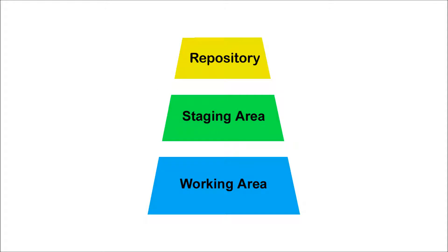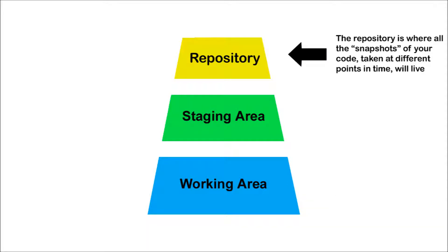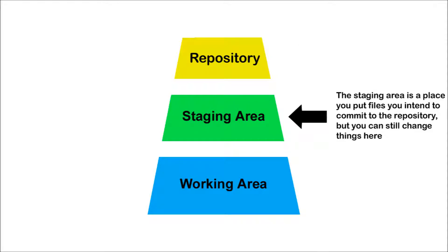Here's a high-level sketch of what Git is. It's based on a three-fold model. The working area is just the space that you always work in when you're working on a coding project — the folders that you keep your code and other files in, and also the programs you use to help build your project. What you use Git for is to capture a series of snapshots of your project as you're working on it at different points in time. The permanent record of all of your snapshots are going to live in what's called the repository. In between the two is what's called a staging area — this is where you put files that you intend to commit into the repository later.